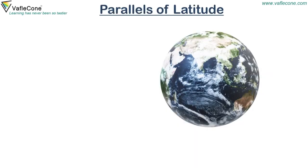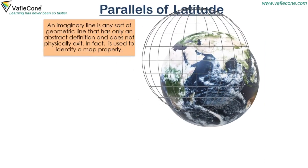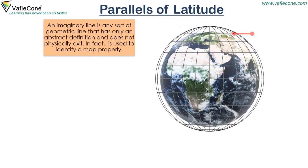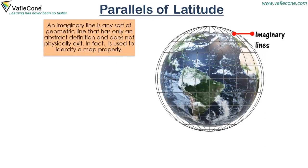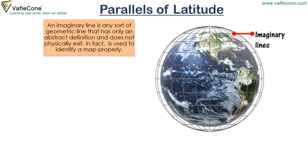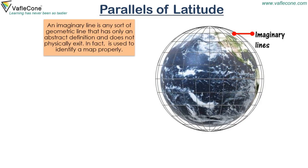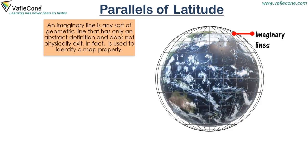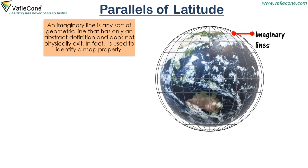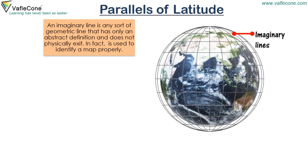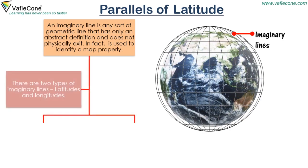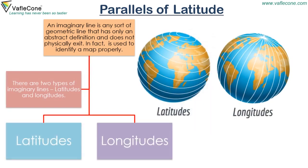An imaginary line is any sort of geometric line that has only an abstract definition and does not physically exist. In fact, it is used to identify a map properly. There are two types of imaginary lines: latitude and longitude.